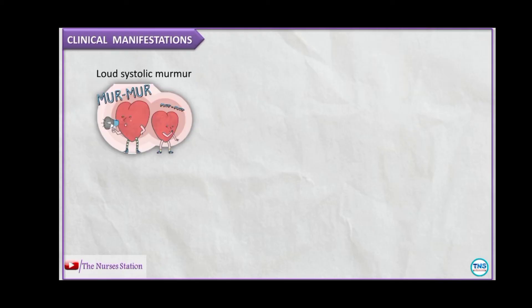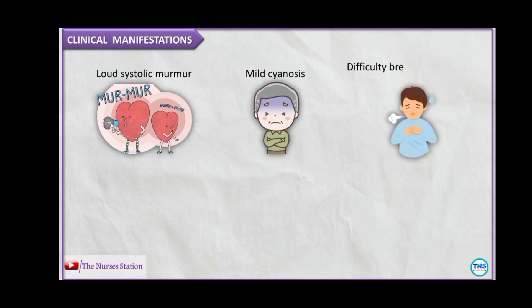The clinical manifestations include a loud systolic murmur, mild cyanosis, difficulty breathing or rapid breathing, wheezing, lack of appetite, and poor weight gain.